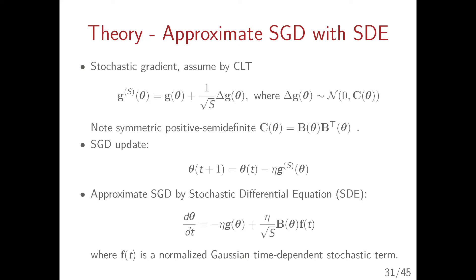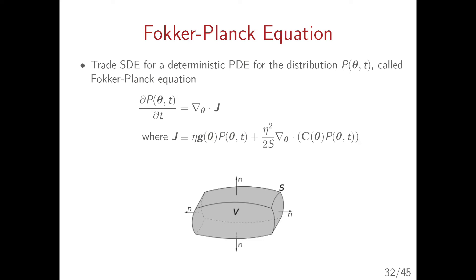We approximate SGD by a stochastic differential equation — things from physics and math. We take the derivative of the parameter with respect to time. This has certain assumptions: specifically, the learning rate must be small enough. The first term is simply learning rate times gradient — nothing interesting. But then we have a noise term controlled by both learning rate and batch size. We have the covariance of gradients, and a technicality that at each time step noise is independently sampled, resembling a Wiener process.